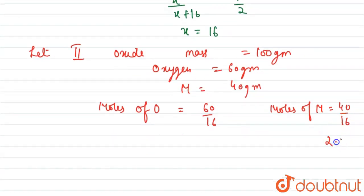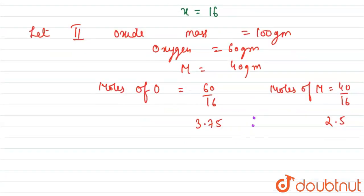So this is the molar ratio for both the compounds. We can convert that into a simple molar ratio by dividing the whole term. We can write it as 3.75 upon 2.5. And if we divide the whole term by 2.5, we will get it as 1.5, so this will come out to be 1.5 ratio 1.